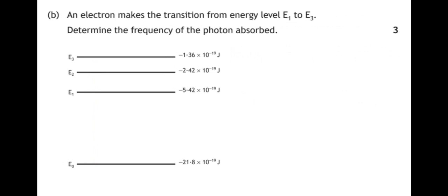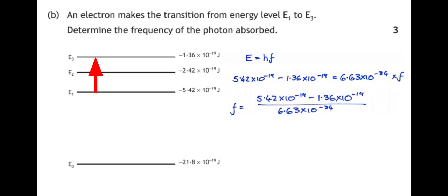Part B. An electron makes the transition from the energy levels E1 to E3, determine the frequency of the photon absorbed. So we're going from E1 to E3. Our formula is E equals H times F, and the energy is the difference between the energy level of E1 and E3. H is Planck's constant, which we get on our data sheet, 6.63 times 10 to the power minus 34. So our frequency is the difference in energy between the energy levels divided by Planck's constant, which gives us a frequency of 6.12 times 10 to the power 14 hertz.